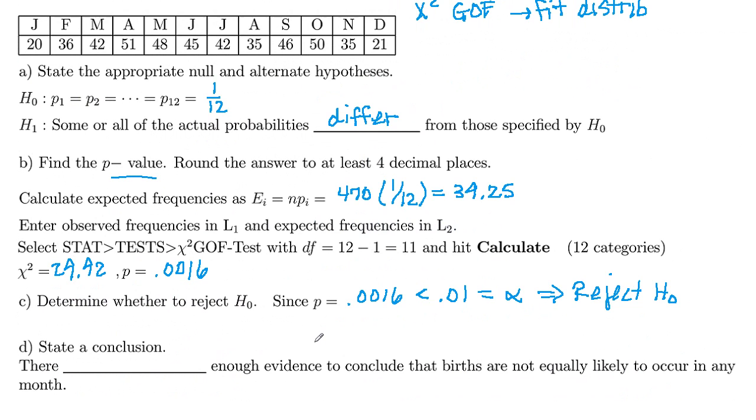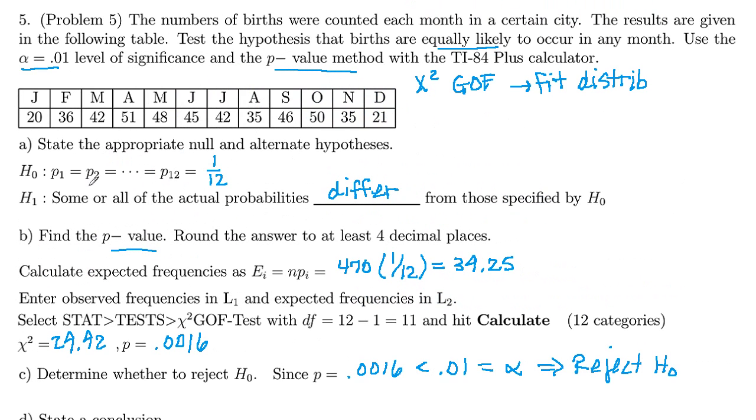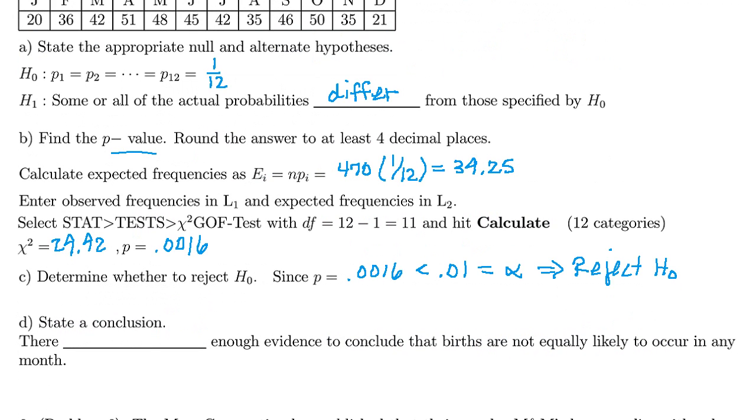So if we reject H₀, then if we go back up here to the top, our H₀ is that proportions are all the same. We reject that. We're going to conclude that H₁ is true. So at least two of the probabilities have to differ from 1/12.